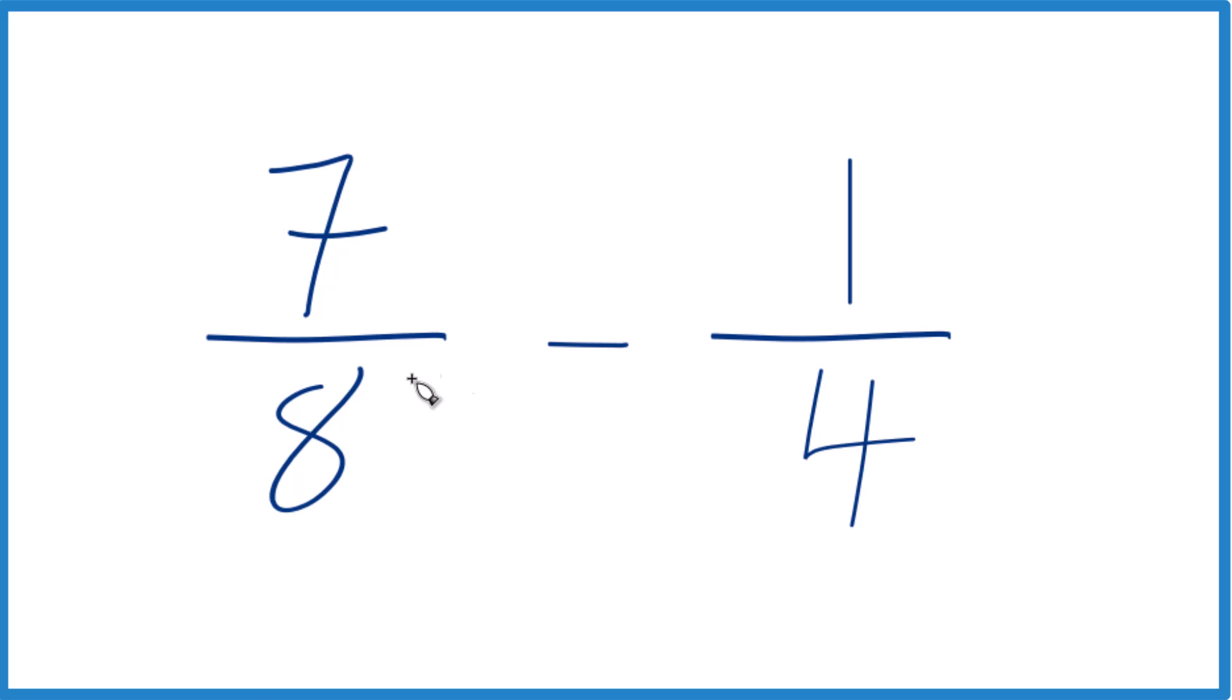So what we need to do when we're subtracting fractions or when we're adding fractions, we find a common denominator. Right now we have 8 and 4, but we want this number to be the same. That'll make it a lot easier.